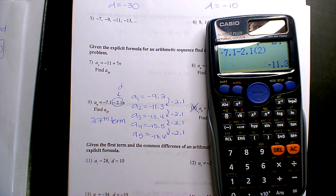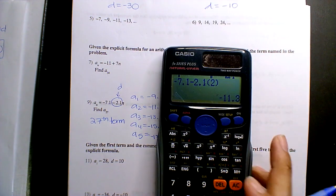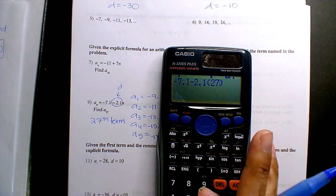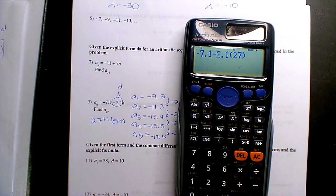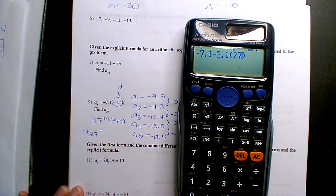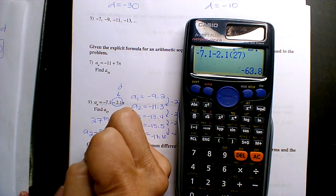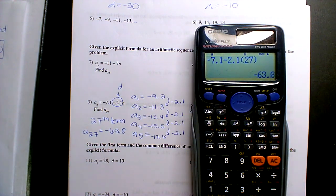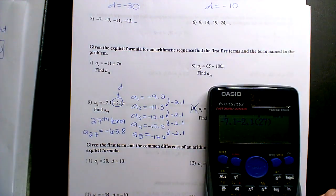Okay, so if you want the 27th term, that means this should be 27, right? That's what you would input. You guys okay? And so the 27th term is equal to negative 63.8. And so that's what you're doing for 7 and 8.